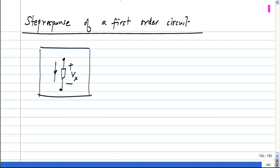Let's say Vx or the current Ix, and the only condition is that it be a first order circuit.